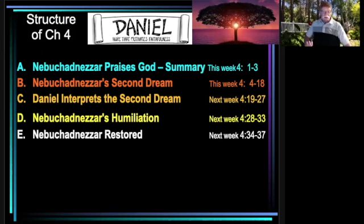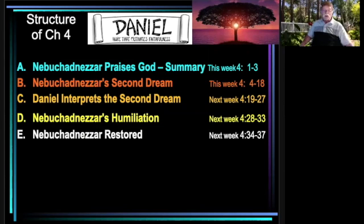The first section is a little different — it's a summary, three verses, a summary of the whole thing. So really, the story does not begin in verse 1; it begins in verse 4. But before that, Nebuchadnezzar praises God and gives a summary of what occurred. Then we get to the actual narrative, where we have a second dream by Nebuchadnezzar, Daniel interpreting the dream, Nebuchadnezzar's humiliation — where he became on the outside what he was already on the inside, a beast — and then his restoration.